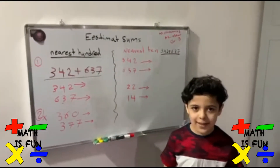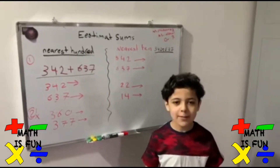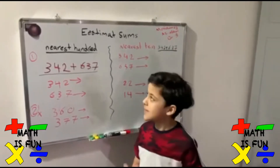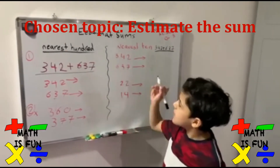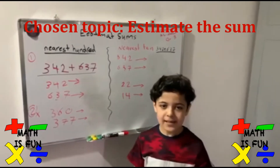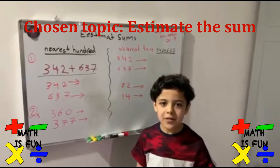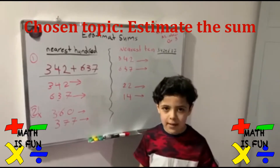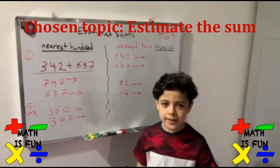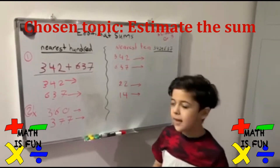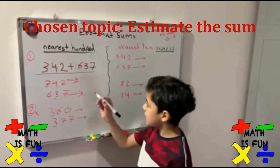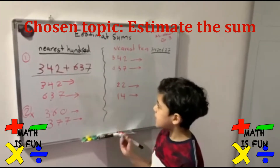I'm Gilnaar Mas'ad once again. I'm going to talk about my project. The topic is estimate sums. What is estimate sums? When you estimate any number, you round to the nearest scale — 100. I'm going to talk about the nearest 100.